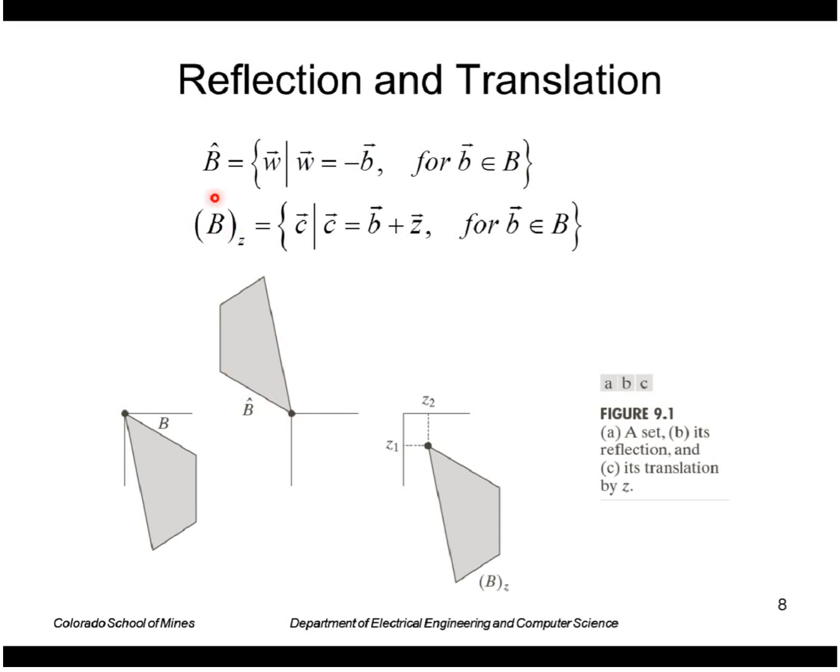The translation is denoted like this with the subscript z. This says that it's the element c such that c is equal to b plus z. Basically we are taking every element of b and adding an offset, a translation z to it. If this is our set B, this would be the translation of B by some vector z.